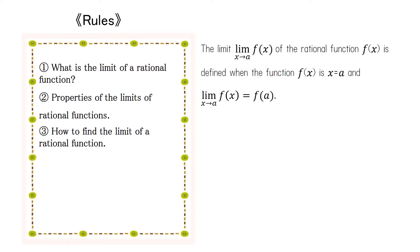Next, we will discuss the properties of limits of rational functions. The limit x going to alpha f of x of the rational function f of x is defined when the function f of x is defined at x equals alpha, and limit of x going to alpha f of x equals f of alpha. Note that this is only true when the rational function f of x is defined when x equals alpha.